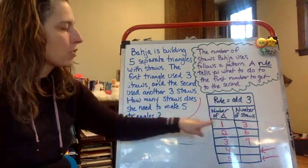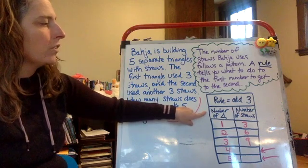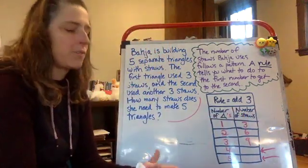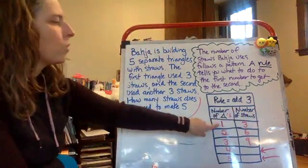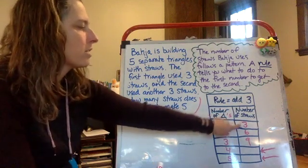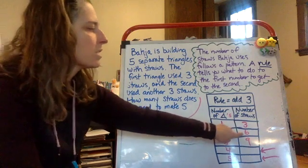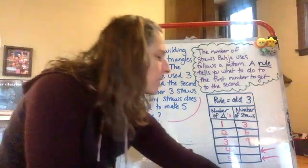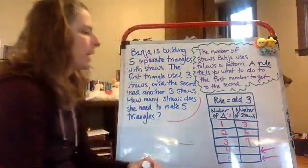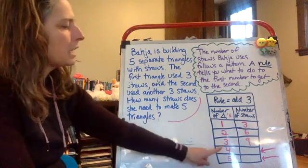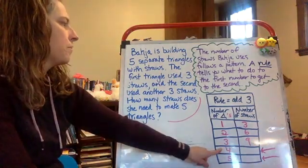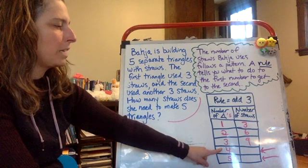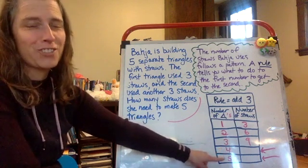On this in-and-out box chart, one side is the number of triangles and the other side is the number of straws that we're using. So you can see when we have one triangle we're using three straws, when we have two triangles we're using six straws, and when we have three triangles we're using nine straws. Part of our answer is we don't necessarily need to know how many straws we need for four triangles, but we need to know how many straws we need for five triangles.